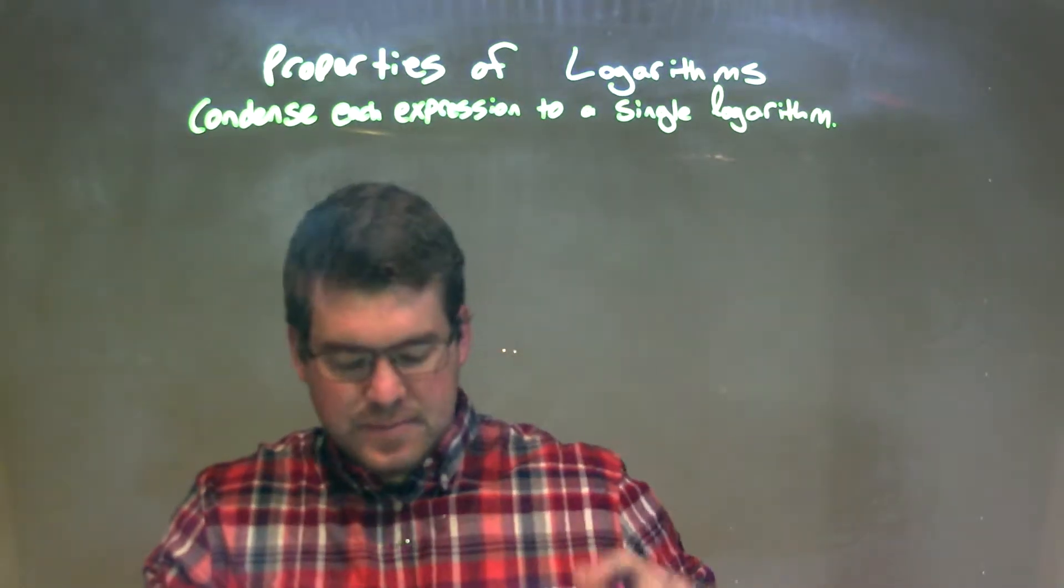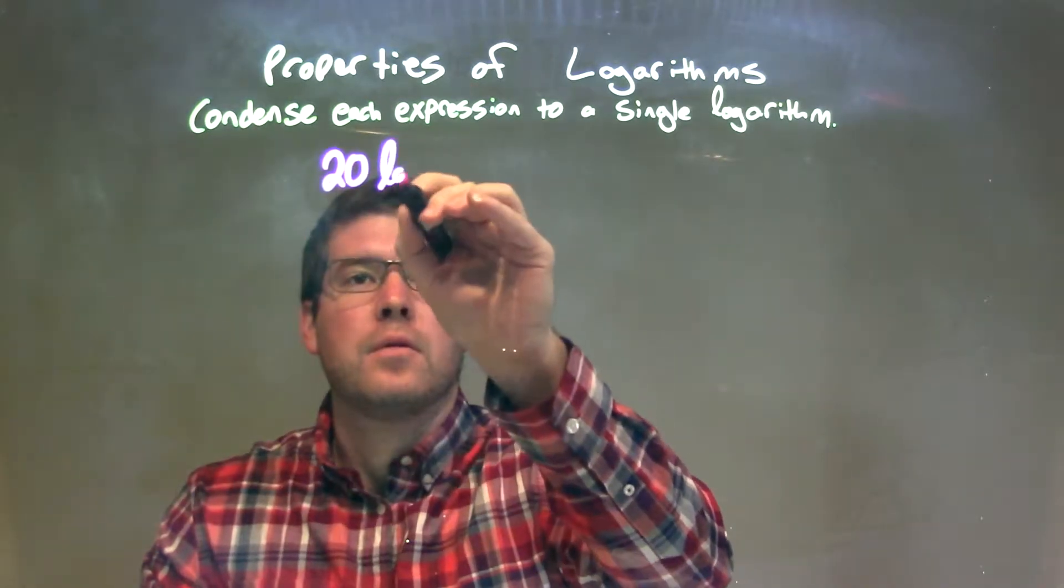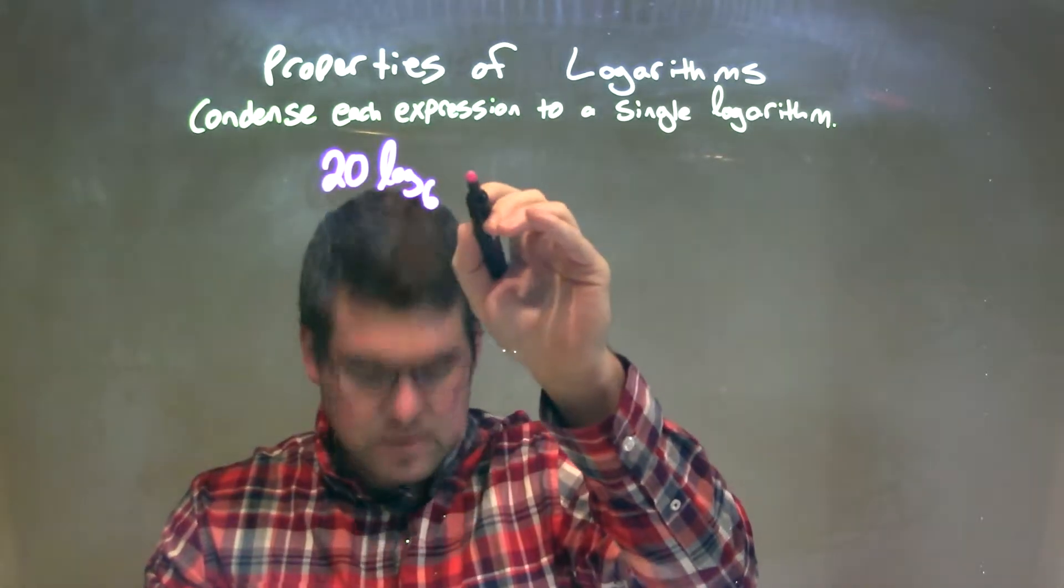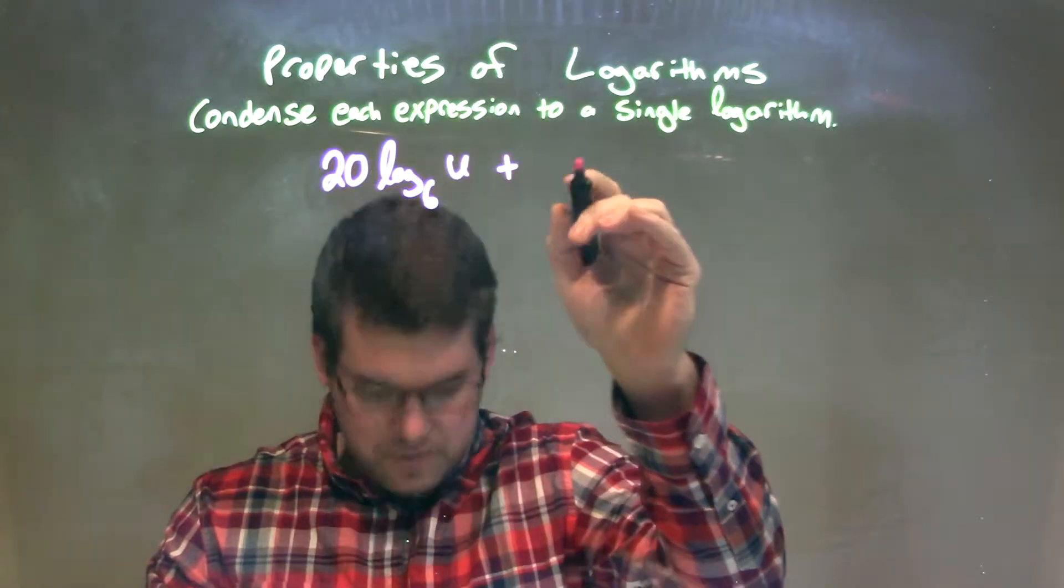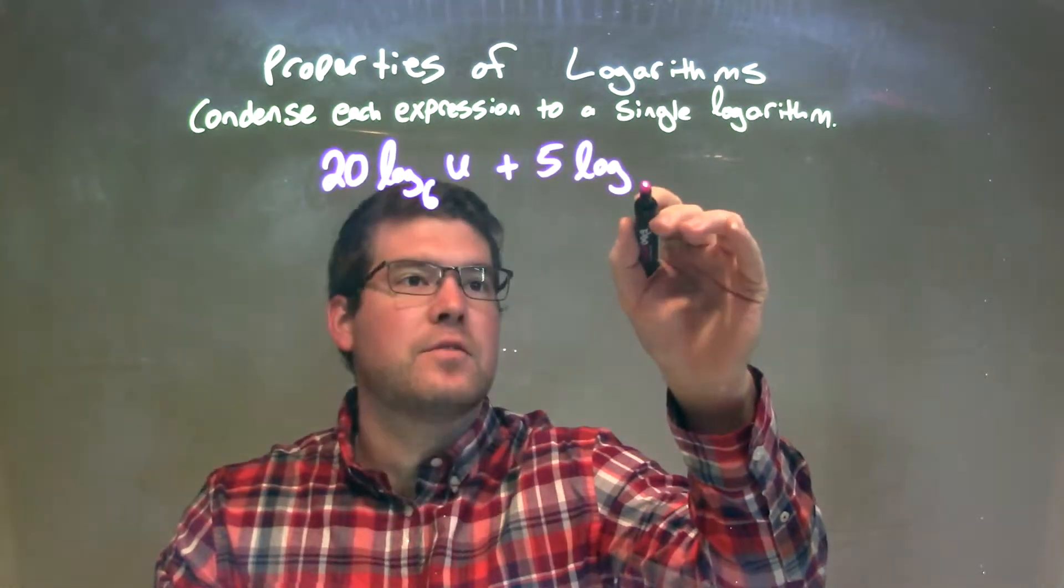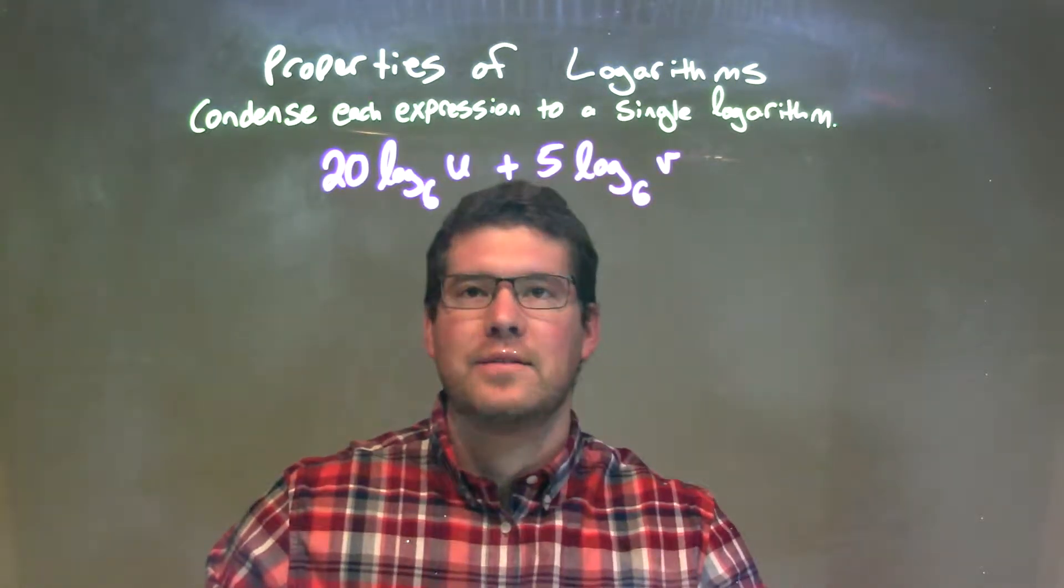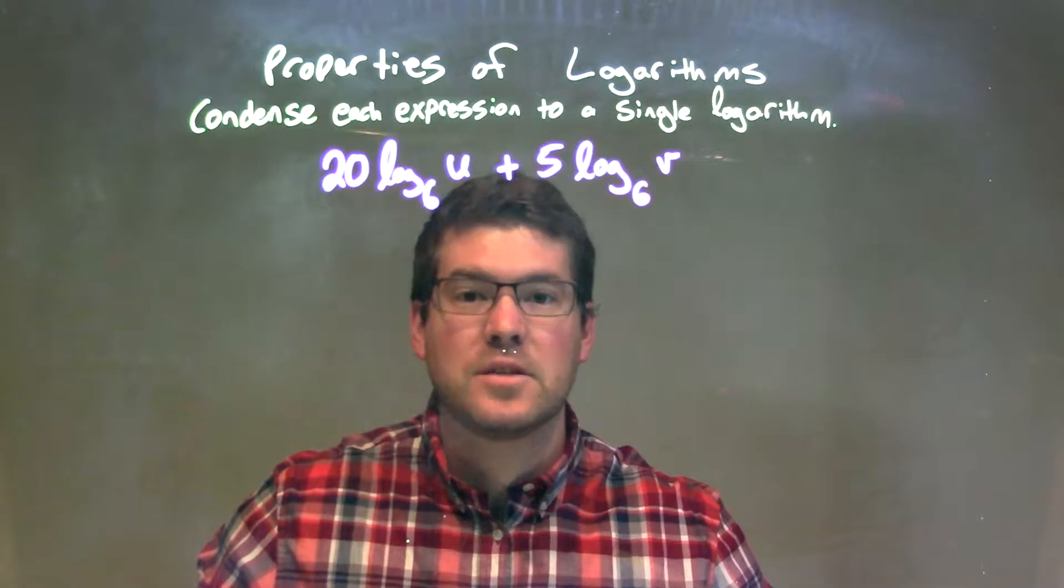If I was given this: 20 log base 6 of u plus 5 log base 6 of v. So we have 20 log base 6 of u plus 5 log base 6 of v.